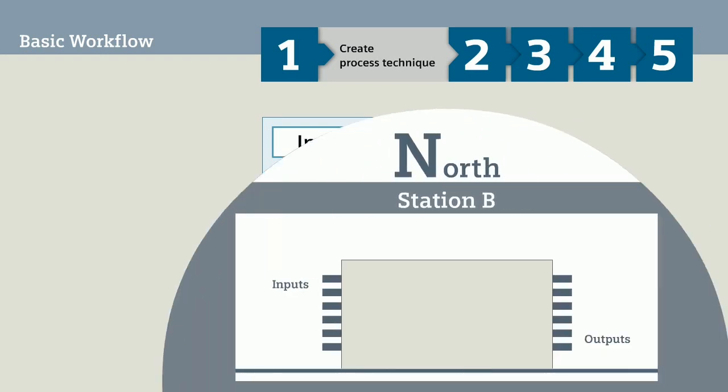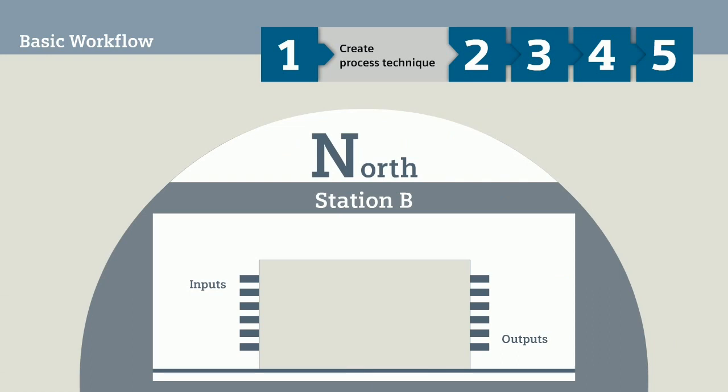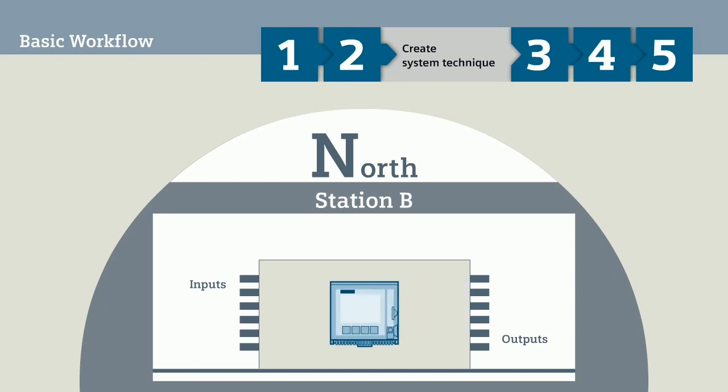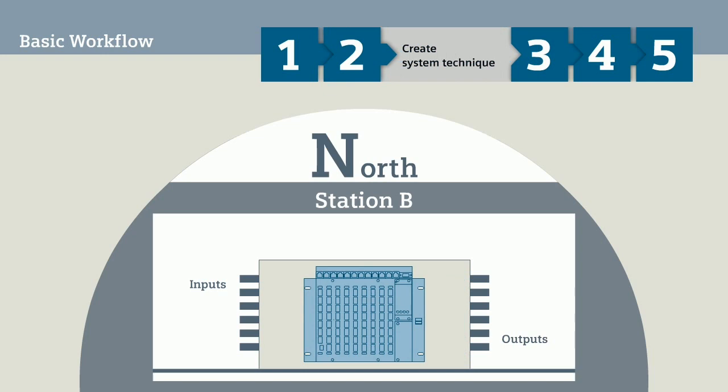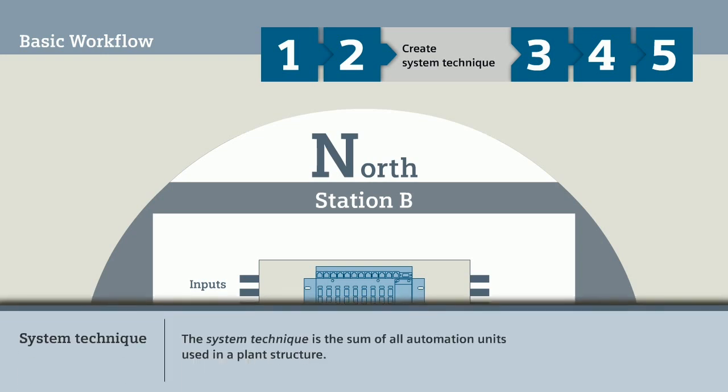When you define the process technique, you only consider the plant structure and the signals to inputs and outputs. In the second step of the basic workflow, you then define which automation units are to be used specifically. In the everyday language of CCAM Toolbox 2, you create the system technique with this. The system technique is the sum of all automation units used in a plant structure.